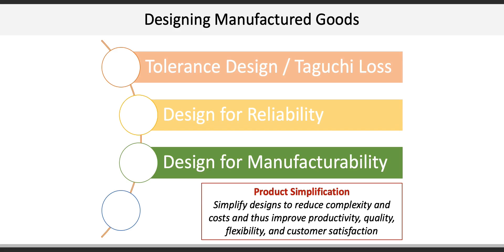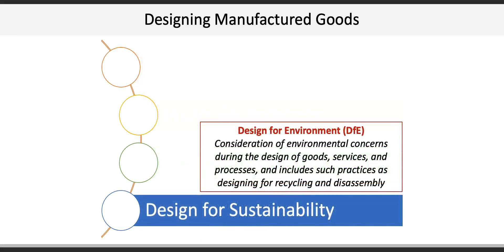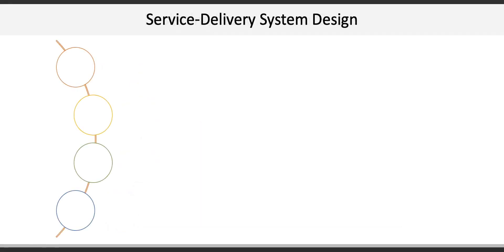The last activity is design for sustainability. For example, design for environment considers environmental concerns during the design of goods and services and processes, and includes practices such as designing for recycling and disassembly.